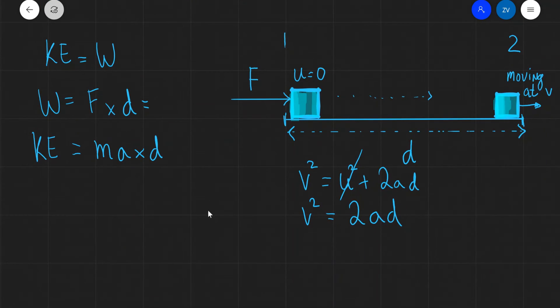Now notice something which is really interesting. Here we have a product of a times d and here we also have the same product as a times d. So what I can do is just rearrange this equation on the right hand side for ad, and what I'm going to get is that ad will be equal to v squared divided by 2.